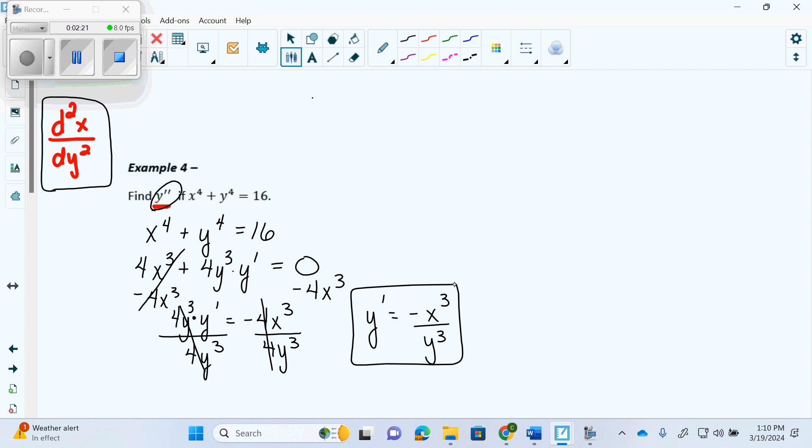So this is all we did yesterday. The only difference between right now and yesterday is I used a y prime instead of dy over dx because one is Leibniz notation and one is the other notation. They mean the same thing. But now we're going to ask for y double prime. So now I have y prime equals negative x cubed over y cubed.